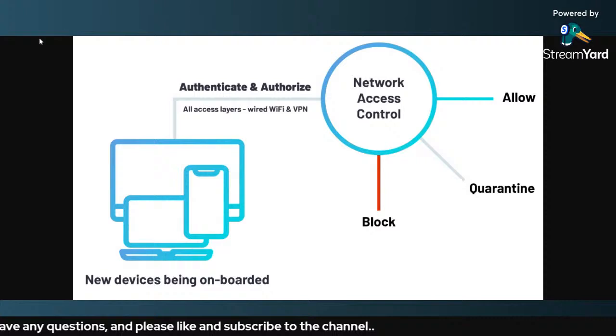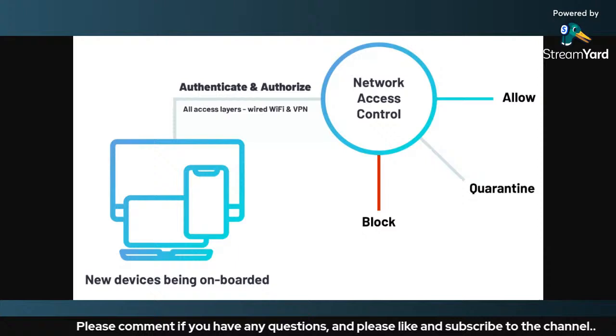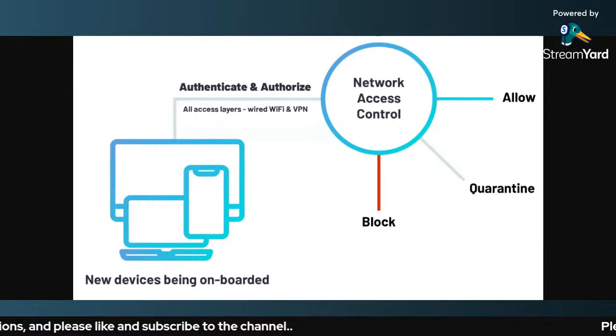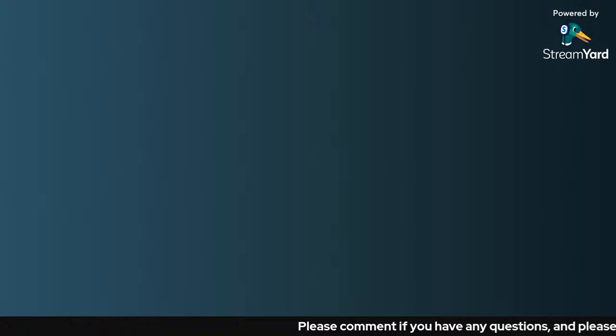In step five, the DHCP server assigns the IP address to the device. This is how a NAC solution works. There are three major states: allow, quarantine, and block. These are the three major states for any Network Access Control solution. Thank you so much for watching.